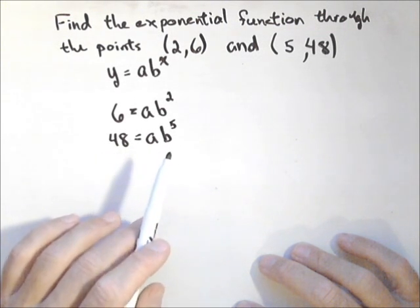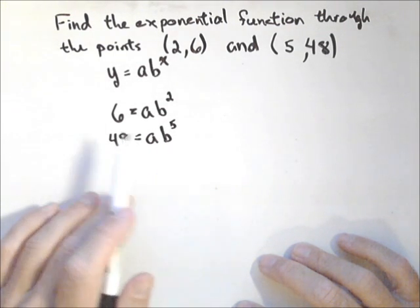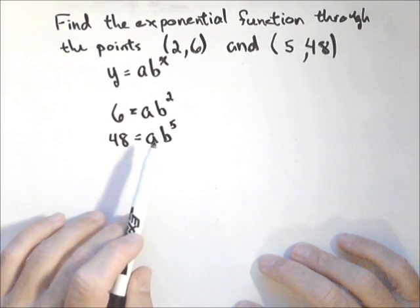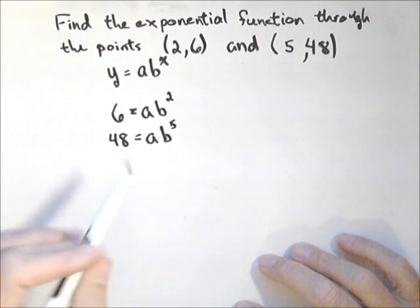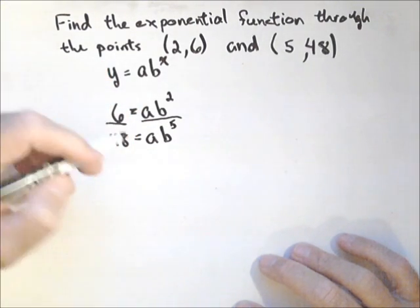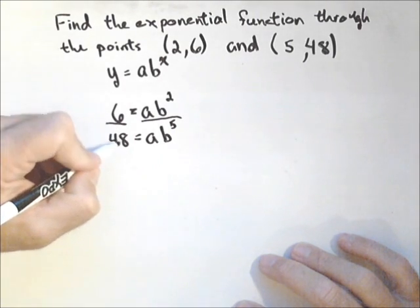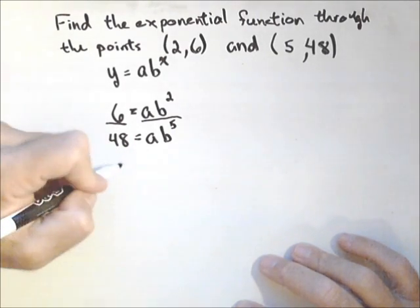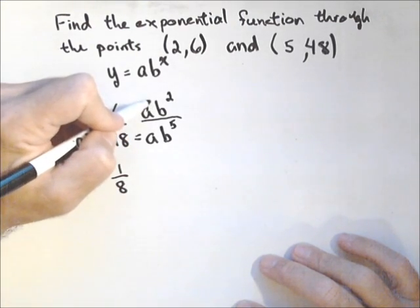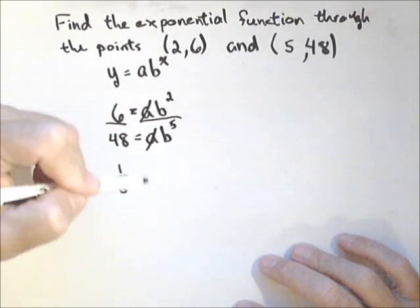Now, we've seen with linear equations, we can do elimination by adding or subtracting. With exponential, because we have a common ratio that makes a function exponential, we do elimination with dividing. So, I am going to divide both sides of the equation. So, I have 6 over 48, which reduces down to 1 eighth. And over here, look what happens. Here's my elimination because the a's cancel.